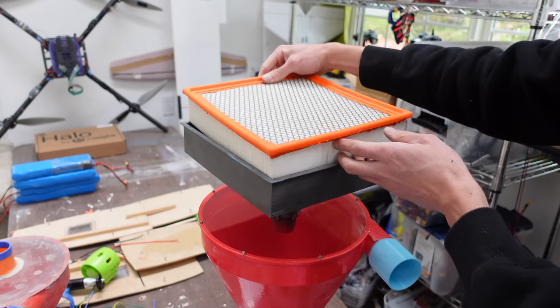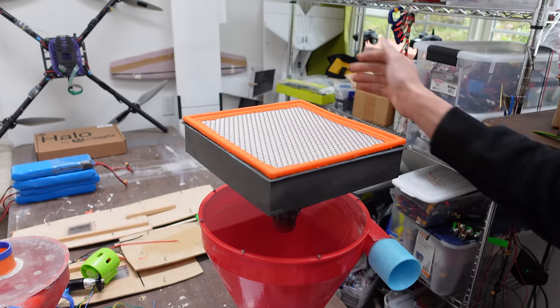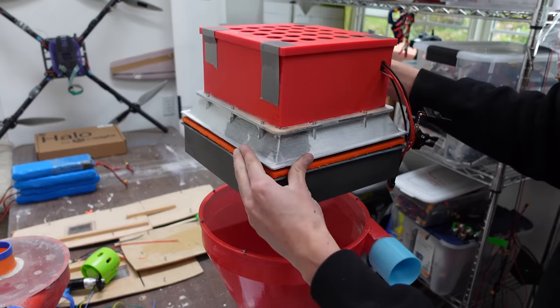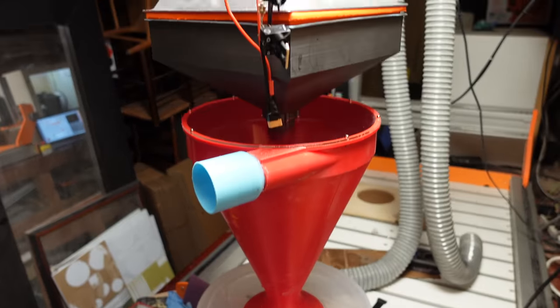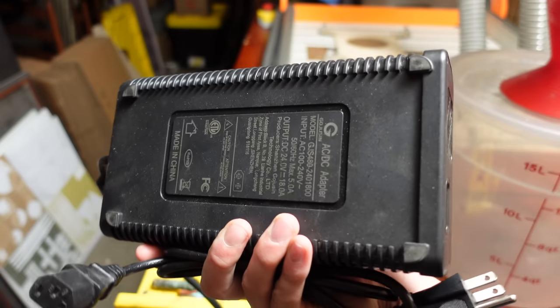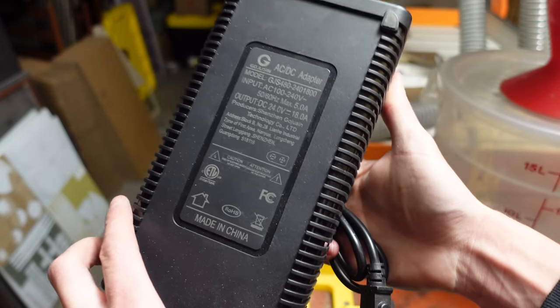I'm using an automotive cabin air filter, which just sits on the top of the filter box. And then the whole motor assembly goes on top of that. With the whole stack together, it looks like this. Very top-heavy. I'm powering the motors off of this fat 24-volt DC power supply.